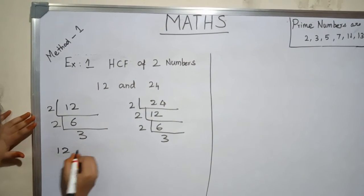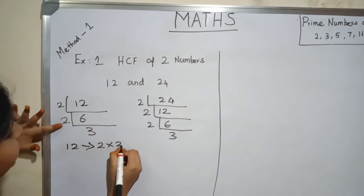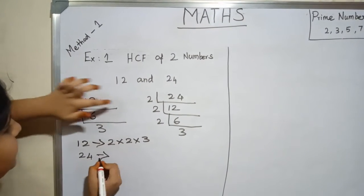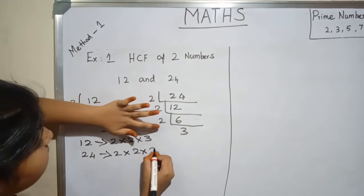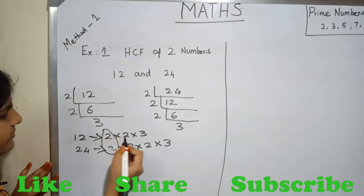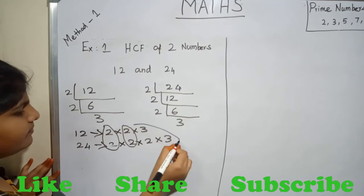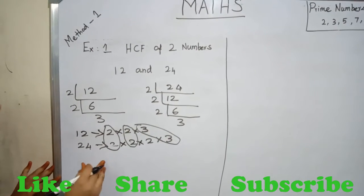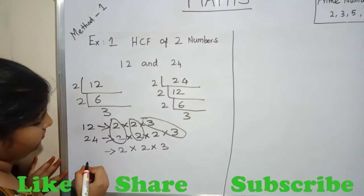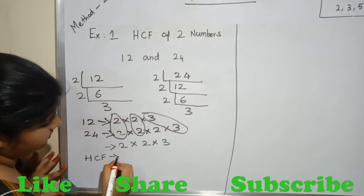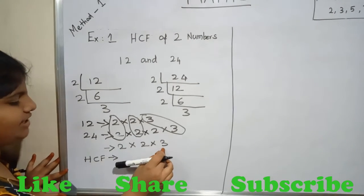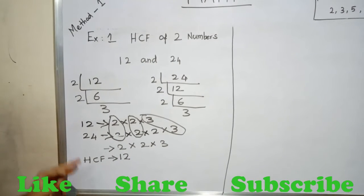The prime factors of 12 are 2 × 2 × 3. The prime factors of 24 are 2 × 2 × 2 × 3. Now we take the common factors. The common factors are 2 × 2 × 3. We multiply all these numbers to get the HCF. 2 twos are 4, 4 threes are 12. So 12 is the HCF of 12 and 24.